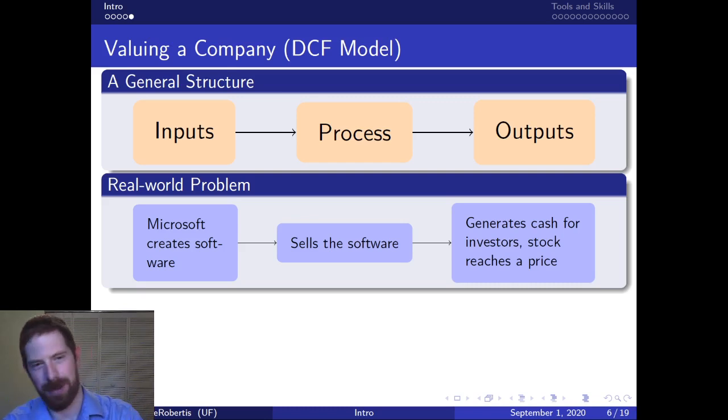So the real world situation that we're modeling is actually the business operations of whatever company that we're valuing. If we think about Microsoft, Microsoft is primarily in the business of selling software right. And so the inputs to the real world situation here is that Microsoft is creating that software and then the process is they sell that software and the output is that they get the cash proceeds from selling that and that leads to the stock reaching a certain price as a result.